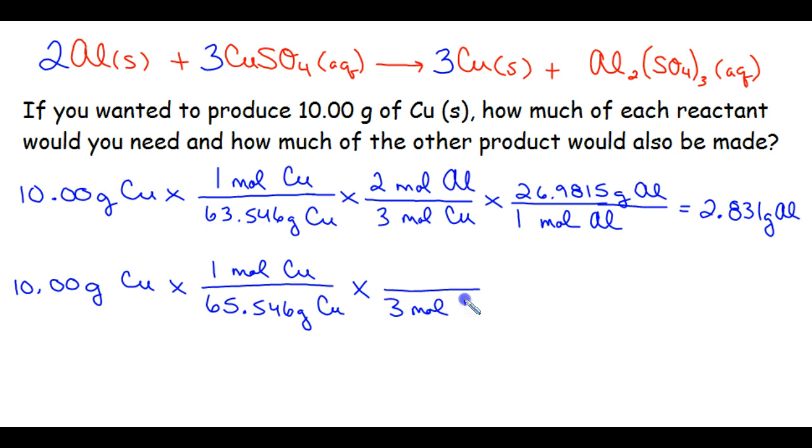Alright, 3 moles of copper from our balanced chemical equation to 3 moles of copper 2 sulfate. And yes, that will reduce to 1 over 1. If you want to reduce it before you do the math, that's fine. If you don't, it will wash out either way.